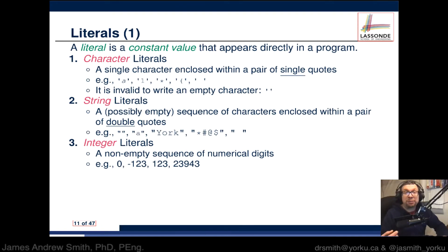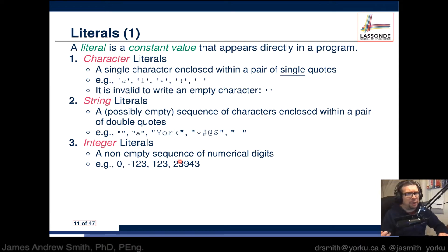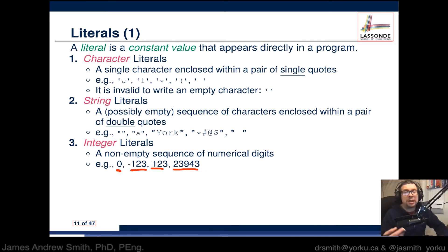You can also have literals that are integers or whole numbers. There are no quotation marks around them, and these are the ones you normally use in math equations. Examples include the number zero, negative 123, positive 123, or 23,943. These are all examples of whole numbers that can be used and are considered integer literals.